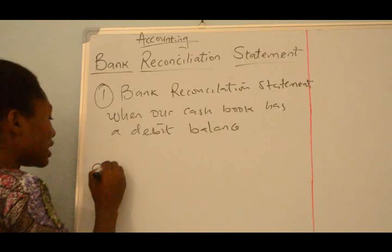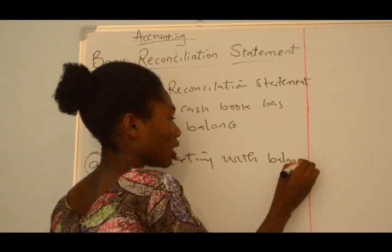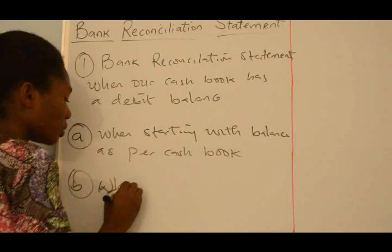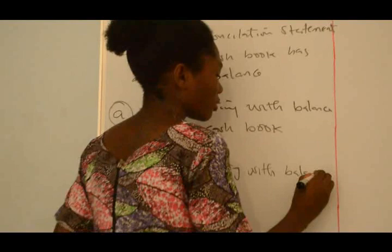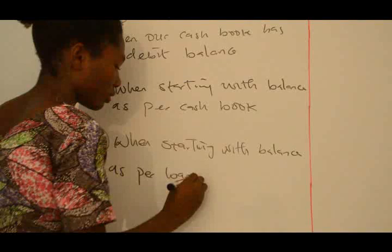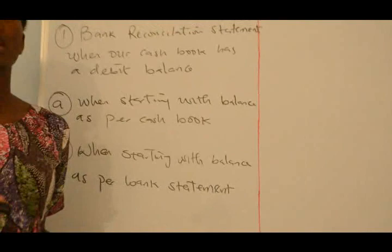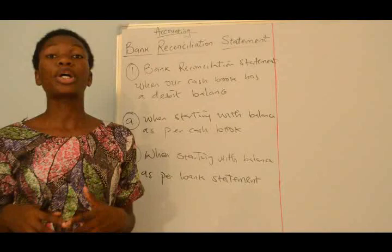The two branches are: when starting with Balance As Per Cashbook, and when starting with Balance As Per Bank Statement. We will be doing A and B. In this video I will be treating the A part, then in our next video we will treat the B part. I want to show you how we can make our Bank Reconciliation Statement when starting with our Cashbook Balance.